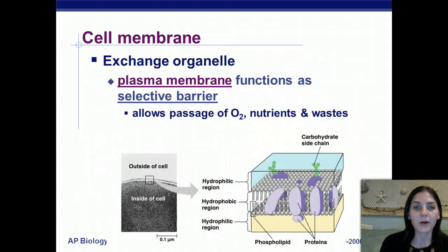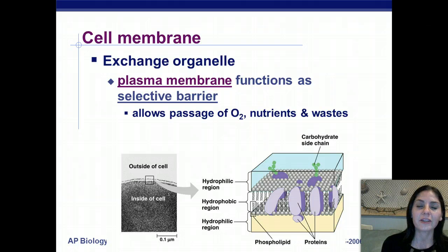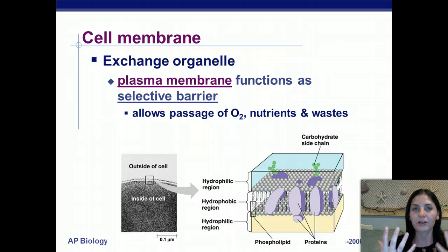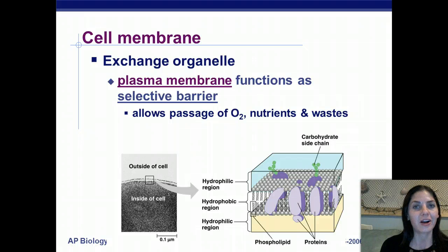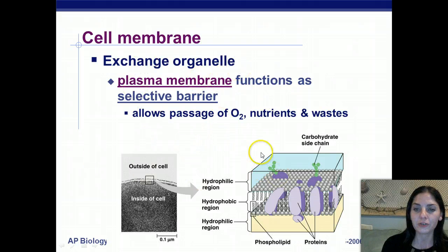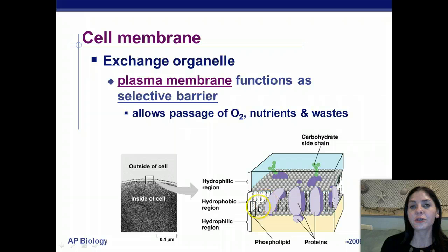The job of exchanging materials falls to the plasma membrane, which functions as a selective barrier. The plasma membrane has a property called selective permeability — it lets some things in but not all things. It allows the passage of nutrients, oxygen, and wastes. It is also composed of a phospholipid bilayer. The hydrophilic heads are water-loving regions, while the hydrophobic tails are water-fearing regions.